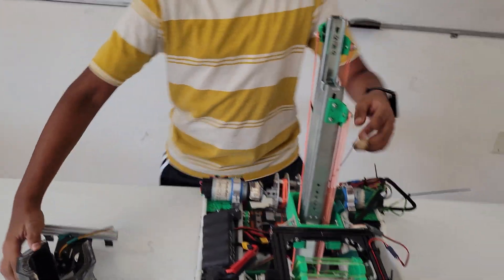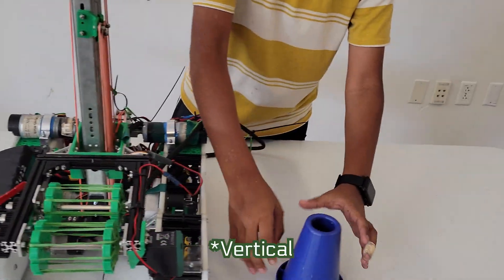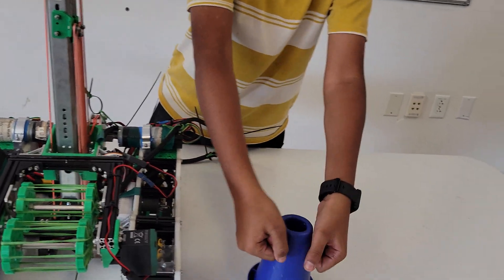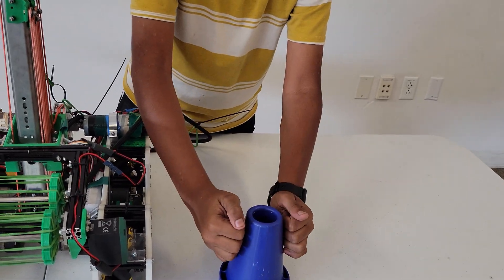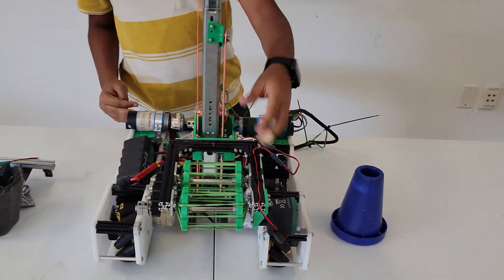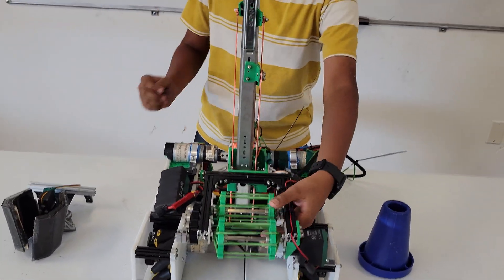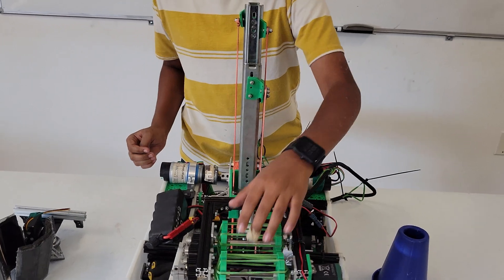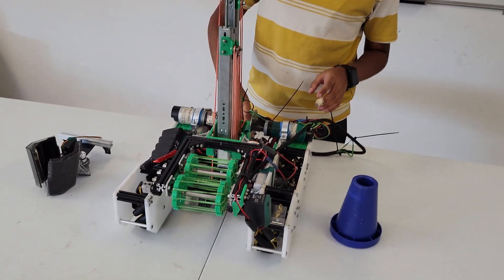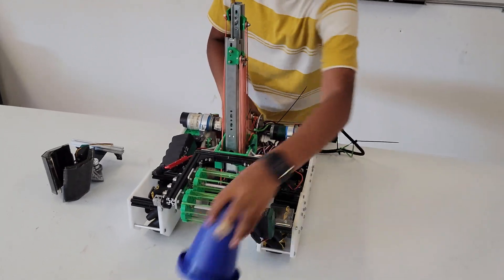The other one was the same thing as this but was horizontal. Instead of how this design picks it up, it used to pick it sideways. The reason why we chose this though is because it's more accurate and easier to use and is lighter. The way it works is once this drops down it picks up the cone.